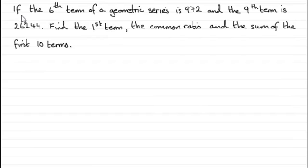What we've got here is if the sixth term of a geometric series is 972 and the ninth term is 26,244, what we've got to do is find the first term, the common ratio, and the sum of the first ten terms.